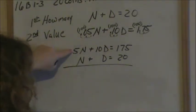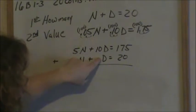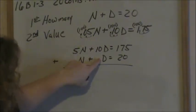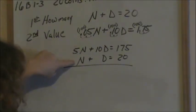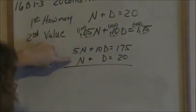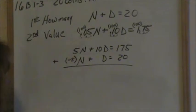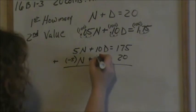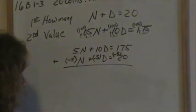Right now, neither variable will eliminate. But we can choose to eliminate nickels or dimes — it doesn't matter, the problem will come out the same. I'm going to choose to eliminate my nickels. In order for the nickels to go away, I need a negative 5 here, because a positive 5 and a negative 5 will cancel. So I'm going to multiply the first equation by negative 5 — everything gets multiplied by negative 5.